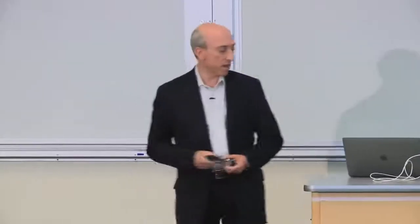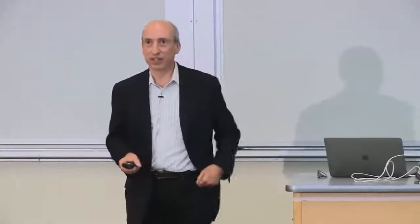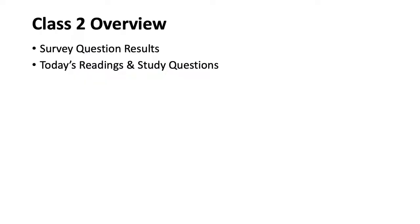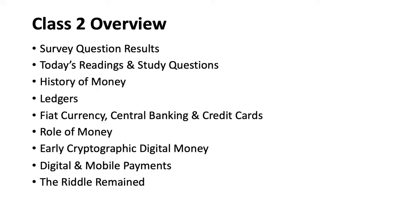Today we're going to go through the feedback you gave us last week about what you wanted to do in the class, talk about the readings, and cover six or seven topics: history of money, ledgers, fiat currency, central banks, credit cards, the role of money, and some early digital money.